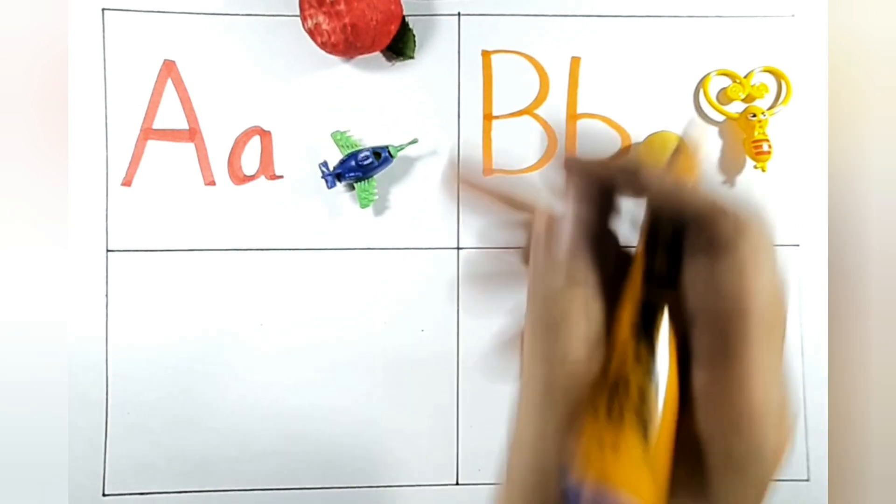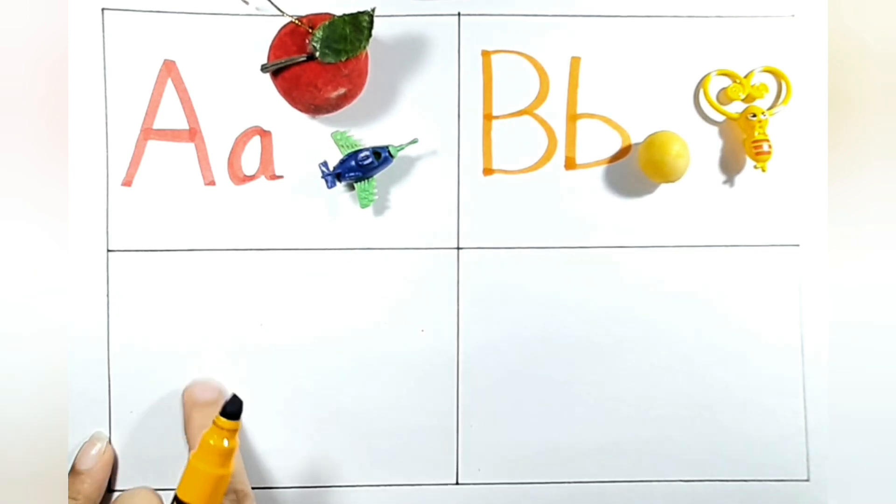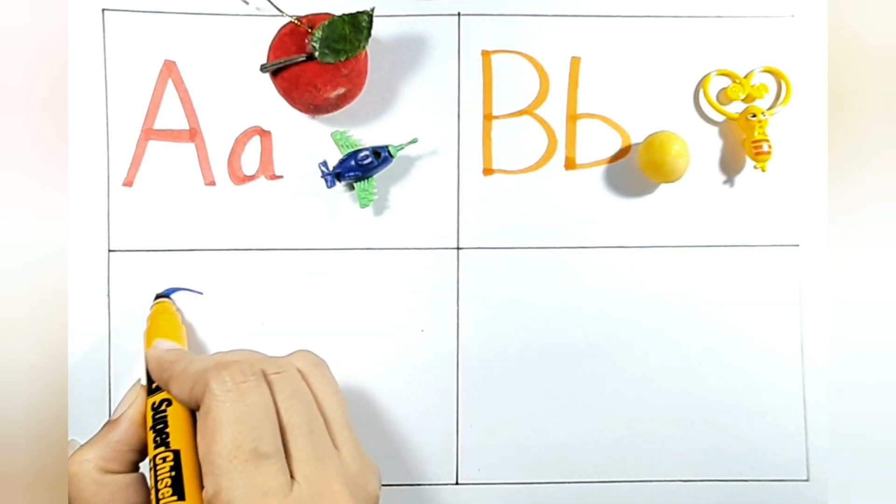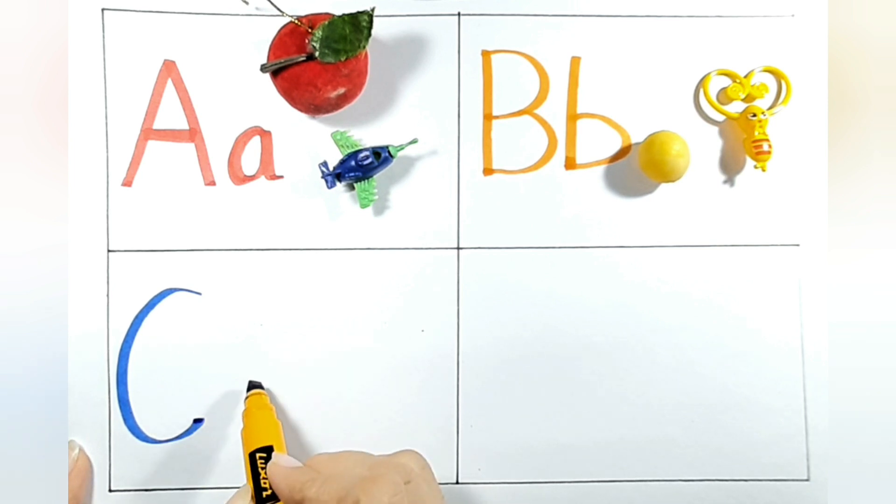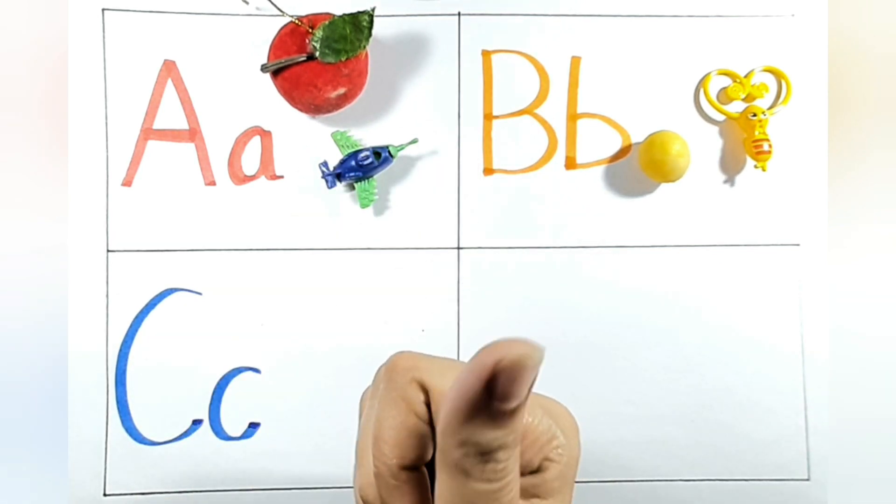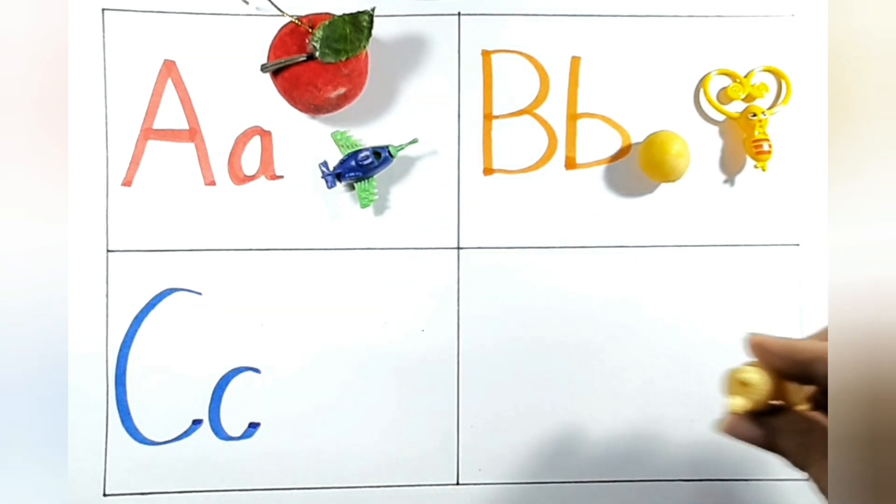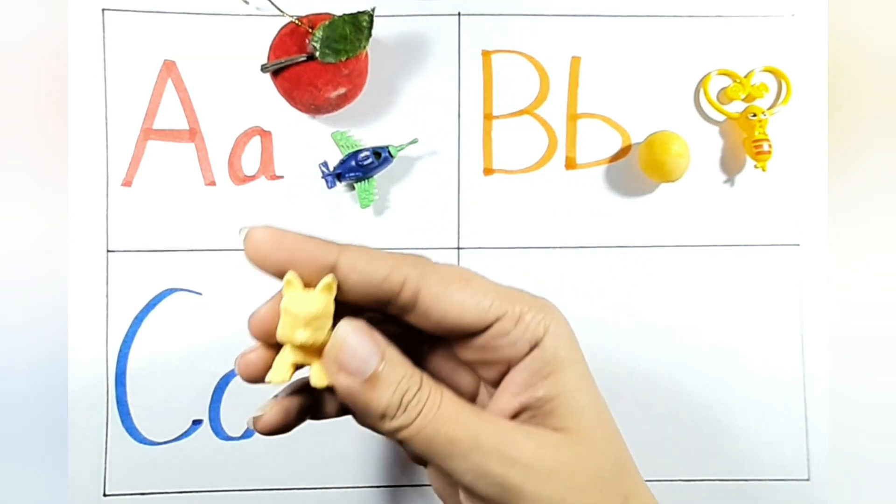Yes, capital C. Now small c. What is C for? What can I bring to show you? Yes, let me bring something for you. C for, C for what is C for? Oh, what is this? Who is coming? Oh, it's a cute cat. C for cat, C for cat.